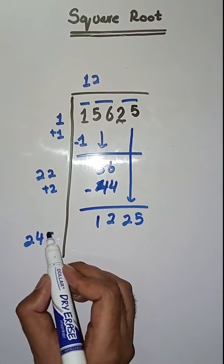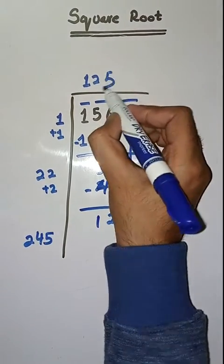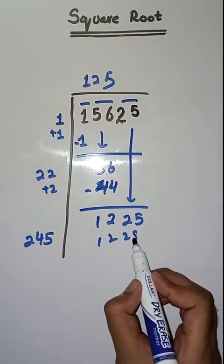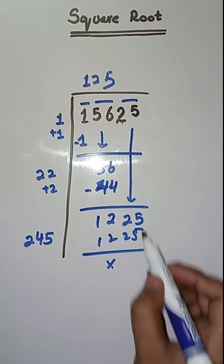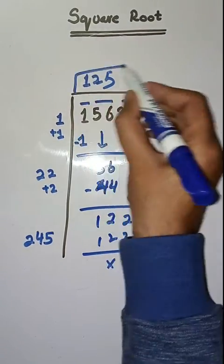So we will take a number 5. 245, 5's are 1225. So this is completely solved. So square root of 15,625 is 125.